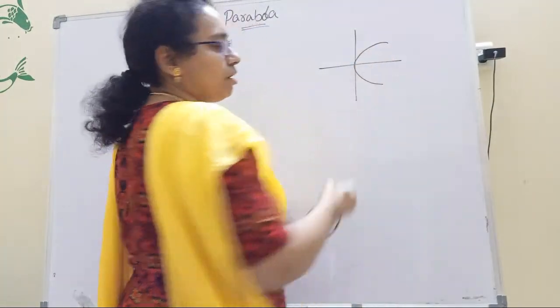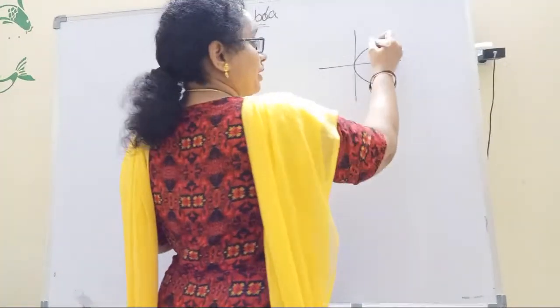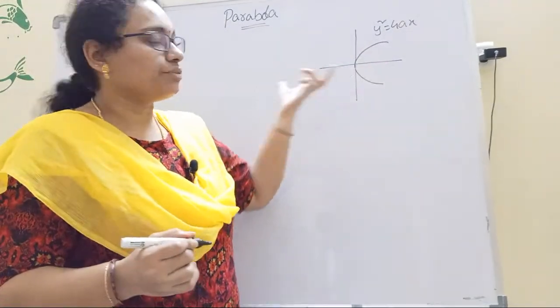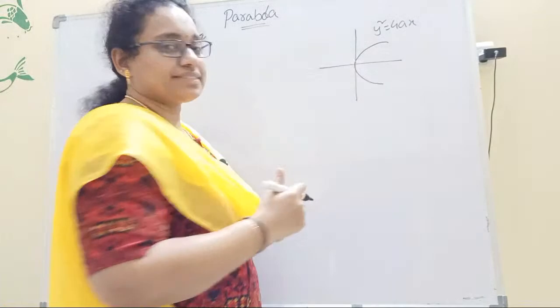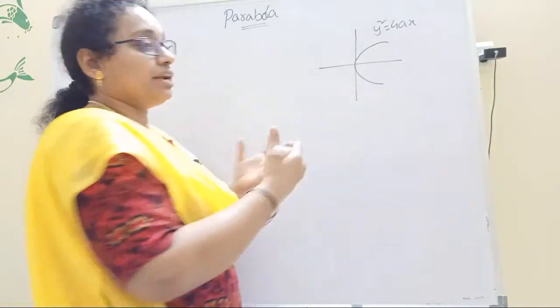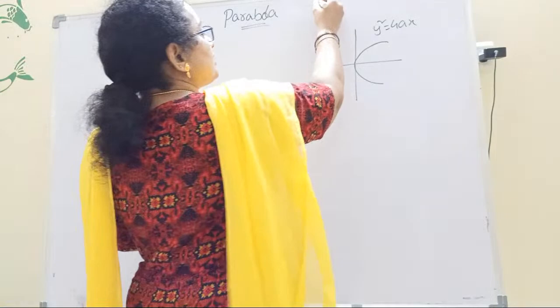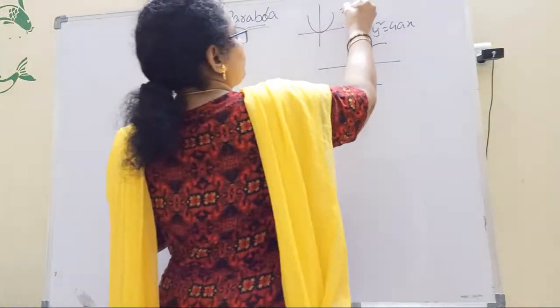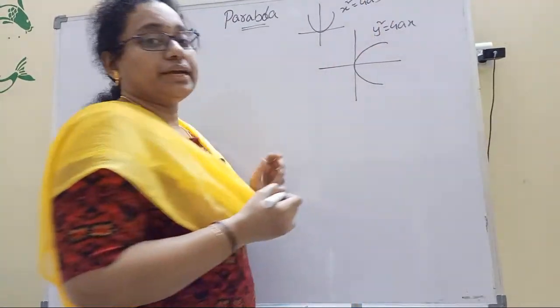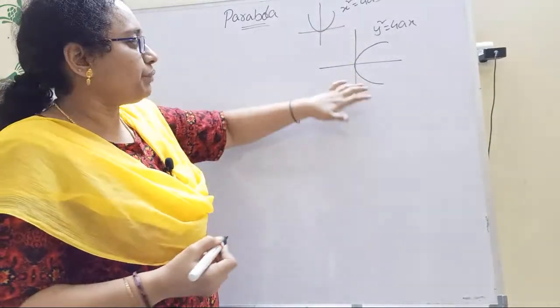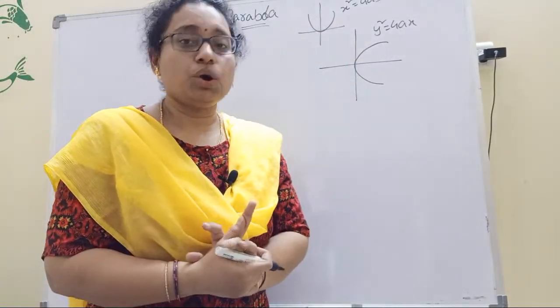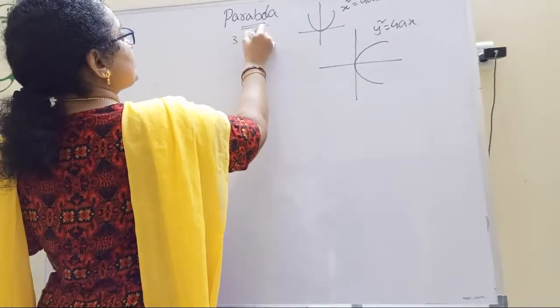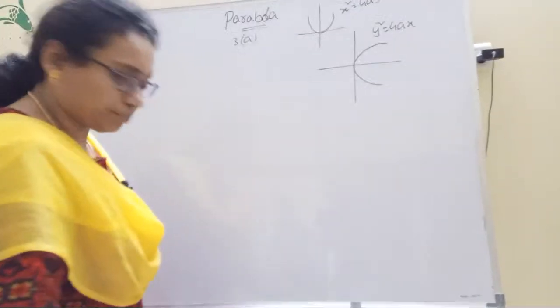This is the parabola passing through the right. Parabola is called y square equal to 4ax. You need to know first what are the problems. Like x square equal to 4ax curve is left side, x square equal to 4ay is left side, and x square equal to minus 4ay is now down. Now we will see the formula, exercise 1a, parabola 3a. First question is visible.